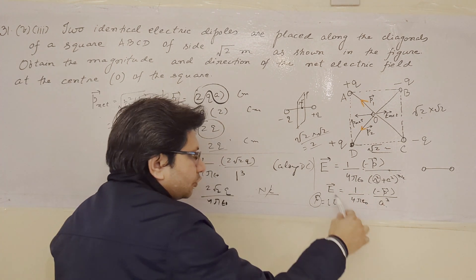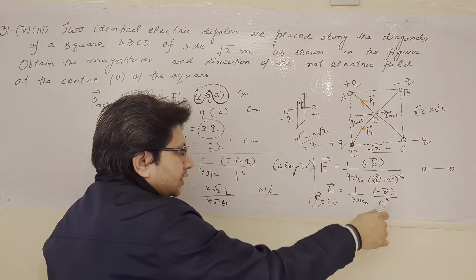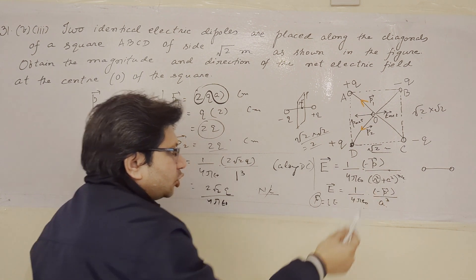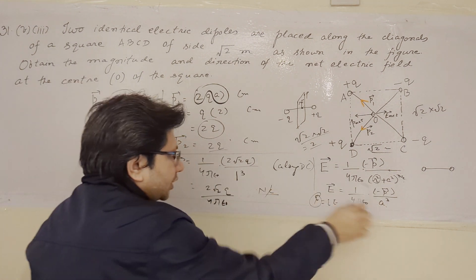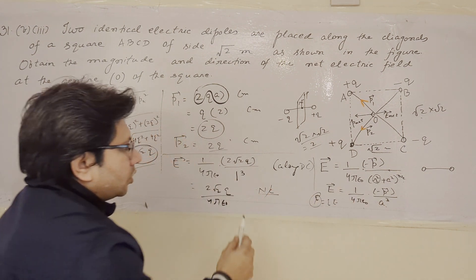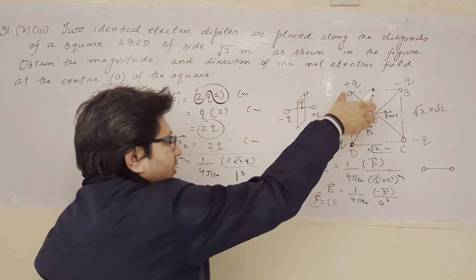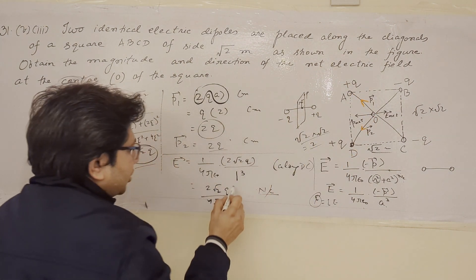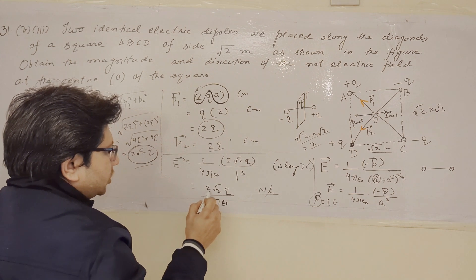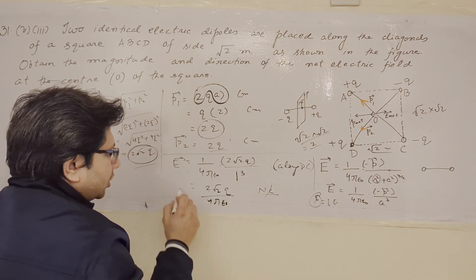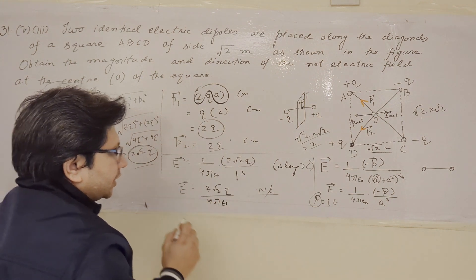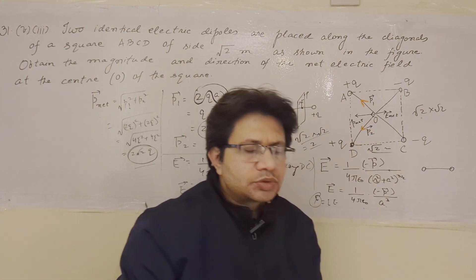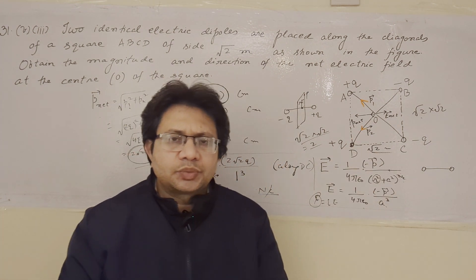अब electric field के formula में: E equals 1 upon 4 pi epsilon naught, minus P upon a cube। P की value 2 root 2q put करेंगे और A की जगह 1 रखेंगे, 1 cube। तो final result आएगा: E equals 2 root 2q upon 4 pi epsilon naught। So this is the net electric field for the combination of these two dipoles. Hope you understand the solution. Thank you.